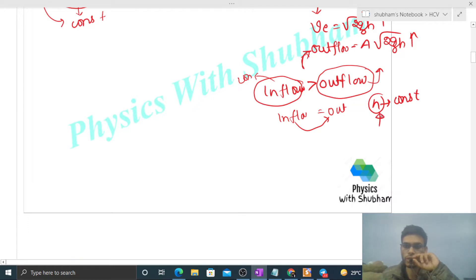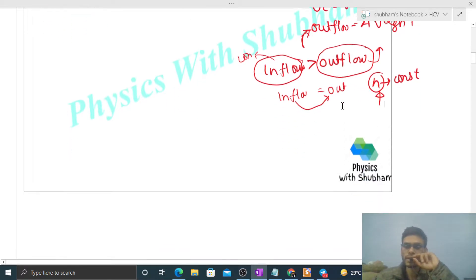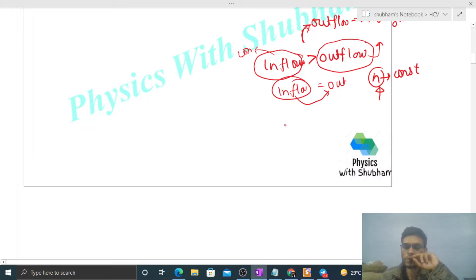After that, the height of water level in this tank will not increase. So what will be the height in that case? You see, inflow is constant, that is A times v, and outflow is nothing but A times square root of 2gh. So from here you can find out the height: v squared equals 2gh. It means h equals v squared divided by 2g.